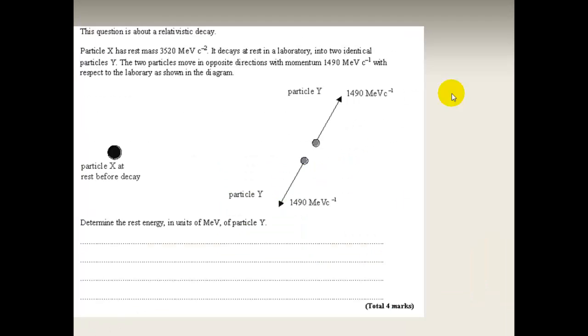Another example here. We have a large particle X which is at rest before decay. It has a lot of energy. It decays and turns into two smaller particles that produce smaller masses, but then they've got excess energy. You're told that each has the same momentum, 1490, with the same mass, and therefore they have the same energy.